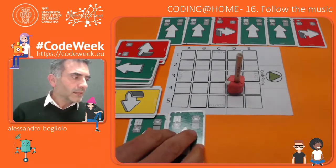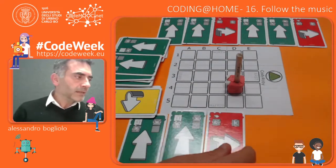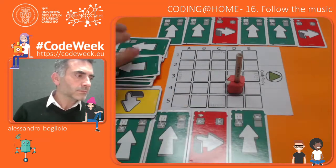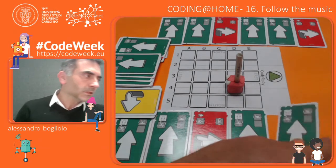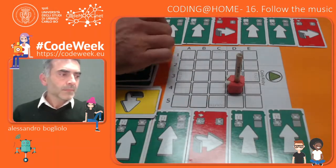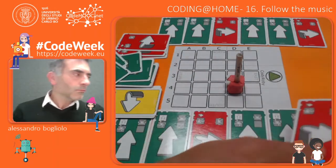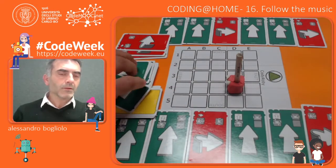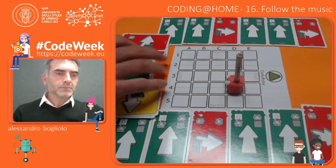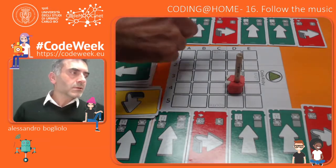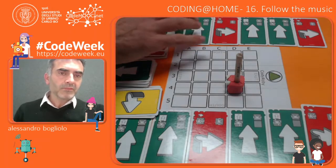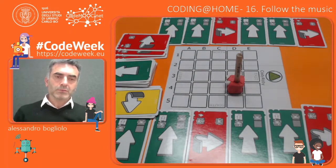So I obtained the effect that I wanted, so I keep coding without making any correction in the code that I already wrote. I need one more turn right at the end. Here is the code. Please consider that all these instructions have to be read in sequence — I put some of them on top and some on the bottom just to fit the screen.